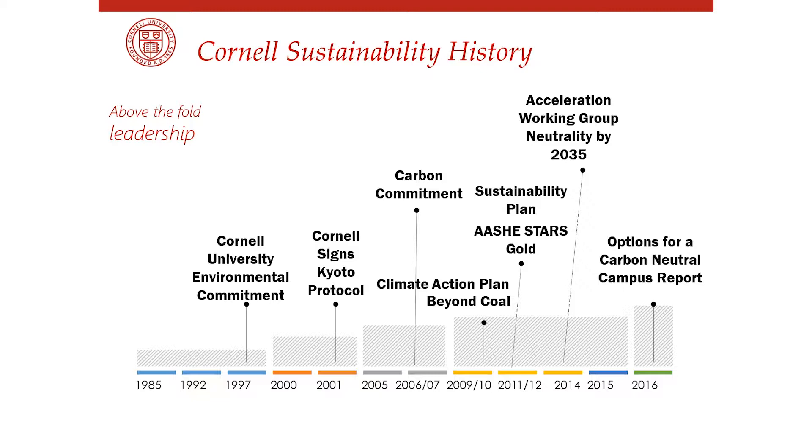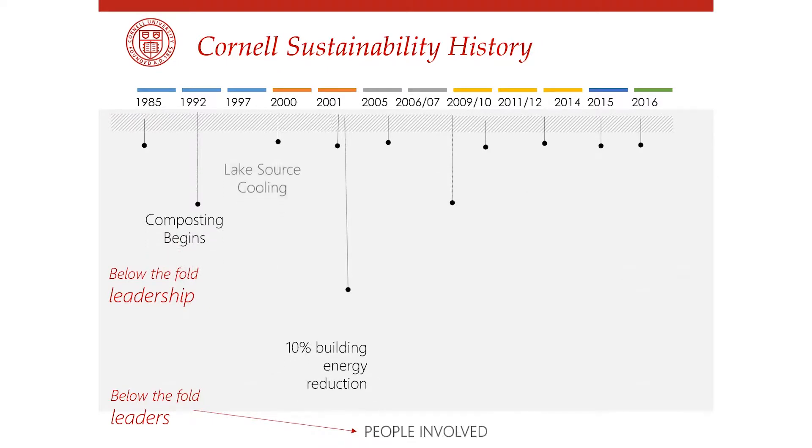We signed our carbon commitment in 2007, climate action plan in 2009, got off coal shortly thereafter, generated our first sustainability plan, accelerated our carbon neutrality goal — things really started picking up. At the end of 2016, we took another look at the climate action plan, and reaffirmed our commitment to the Paris Agreement with the other Ivy Plus institutions in 2017. Those are some of the big things that have been going on.